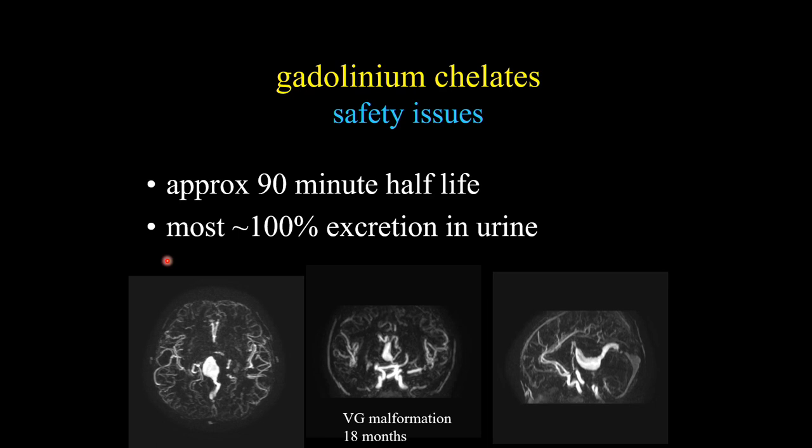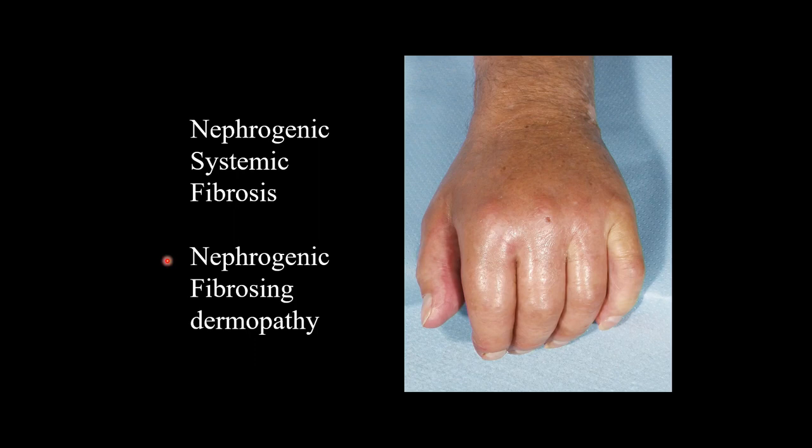When we talk about the typical extracellular fluid space agent, it has a 90-minute first-pass half-life, and the kidneys are responsible for excretion. There are some agents with an alternative liver pathway, but for the most part, extracellular fluid space agents are kidney excreted.